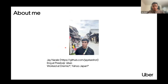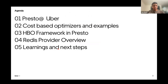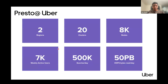A bit about me: I currently work at Uber on Presto. I've also worked with query engines like Dremio and some databases at Yahoo Japan. I've been working in data for around four to five years. The agenda today covers: optimizers briefly, the HBO framework in Presto open-sourced by Meta, then the Redis provider that we open-sourced at Uber, and finally learnings and next steps. Let's start with the scale of Presto at Uber.